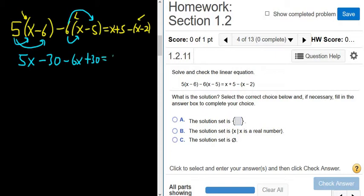On the right-hand side, we have x plus 5. Then here there's like a negative 1, so we distribute that. We get negative x and then plus 2.